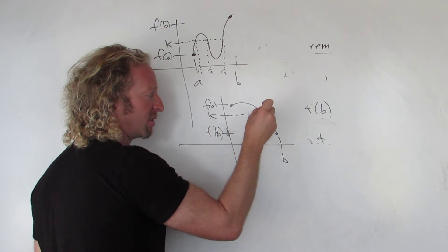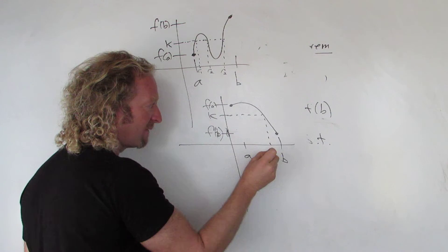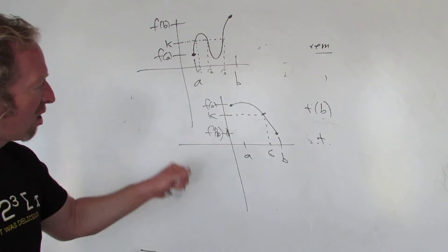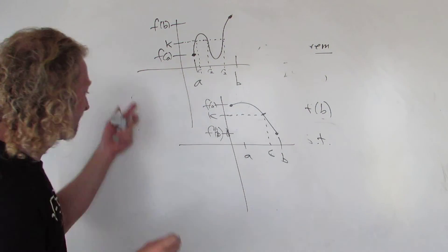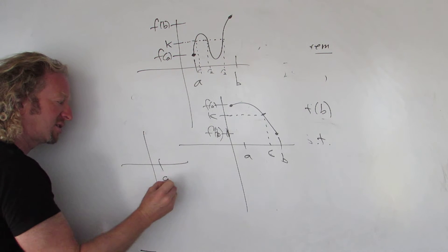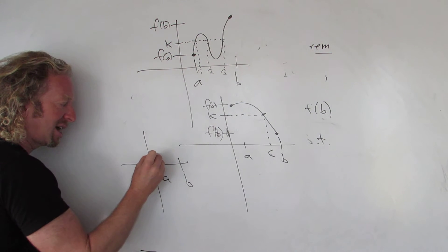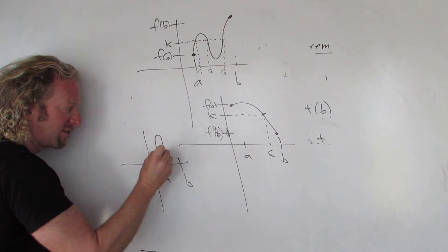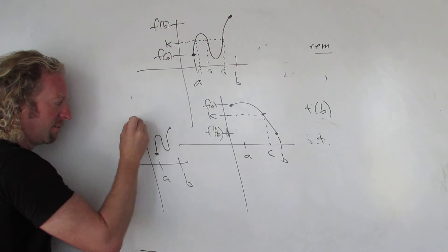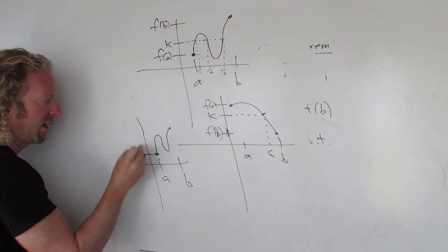Well, in this case, boom, there's our C. So F(C) is equal to K. So it's called the Intermediate Value Theorem. It's basically saying a function that's continuous on a closed interval takes on every intermediate value, right? Between F(A) and F(B).